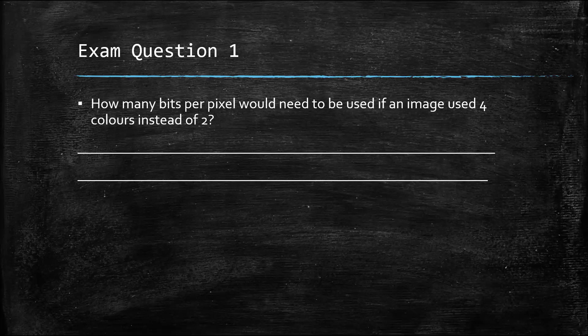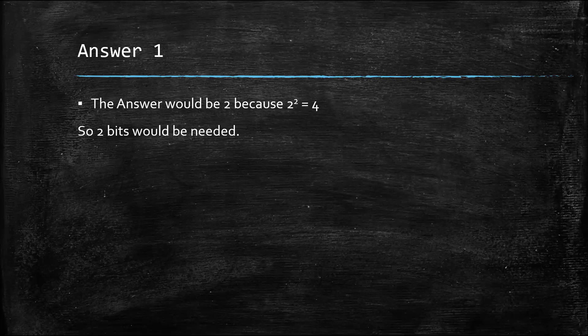Exam question one: how many bits per pixel would need to be used if an image used four colors instead of two? Using powers of two: the first power of two is 2 (one bit), and the second power of two is 4 (two bits). So if we have four colors, the answer is two bits — because two to the two equals four.